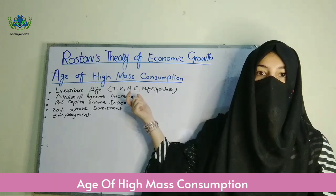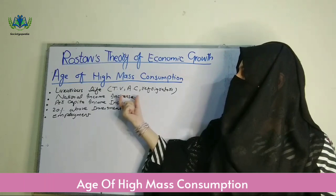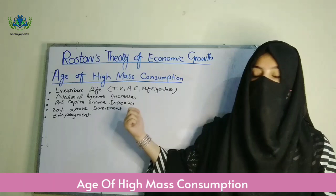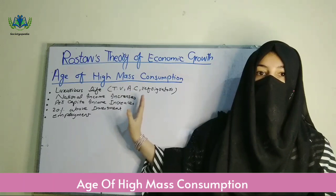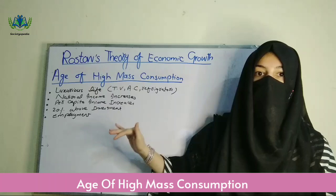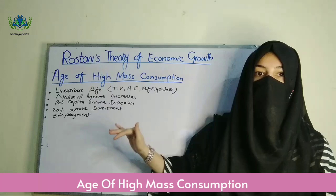The fifth stage is the age of high mass consumption. Here, consumer technology such as televisions and refrigerators is available — technology that provides comfort and ease to people. In this last stage, the economy is completely stable, people can fulfill not only their basic needs but also their desires and wants. The labor class is also prosperous.